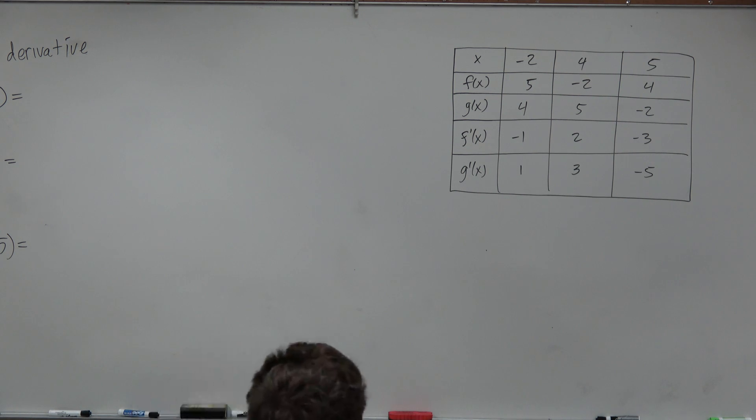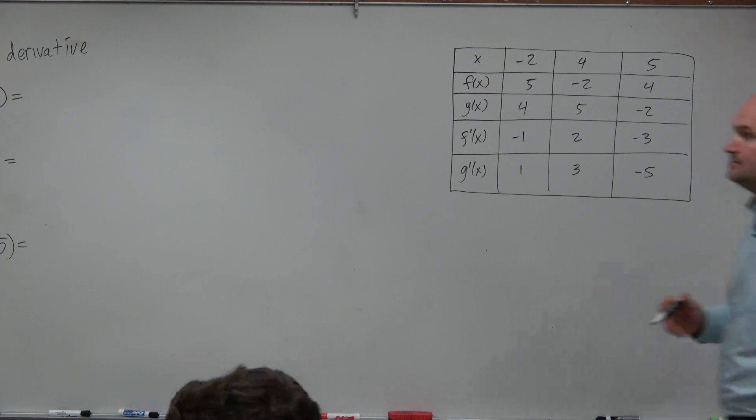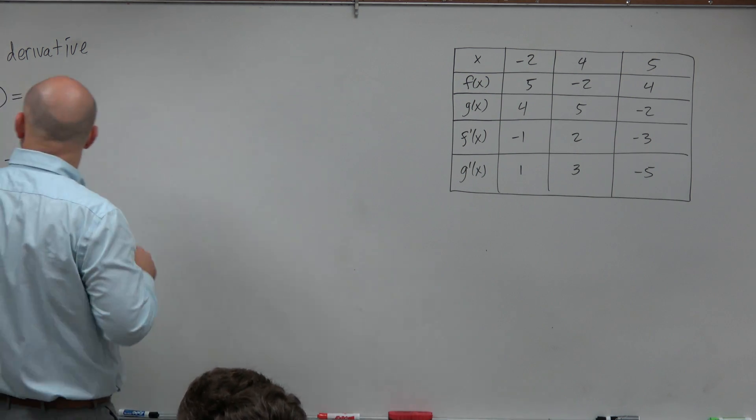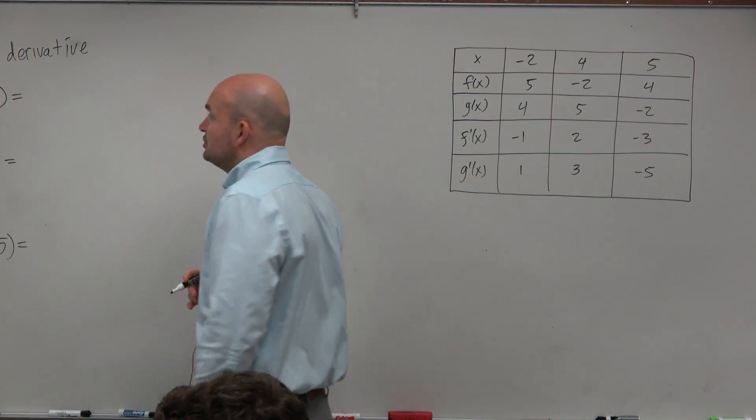All right, so just remember guys, when we're given a table of values, in this case what they're asking us to do in the first one is find f times g of negative 2.